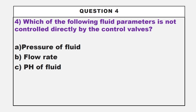We are moving to our fourth question. Which of the following fluid parameters is not controlled directly by the control valve? Option A: pressure of fluid. Option B: flow rate. Option C: pH of fluid. Please choose the correct answer.